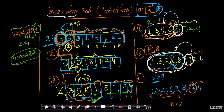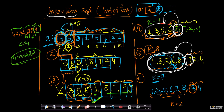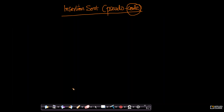In the previous video, we understood the intuition behind insertion sort and took a very simple example to understand what is happening in insertion sort. Now let's try to move to some code. As important as intuition is, equally important is the ability to convert that intuition into code.